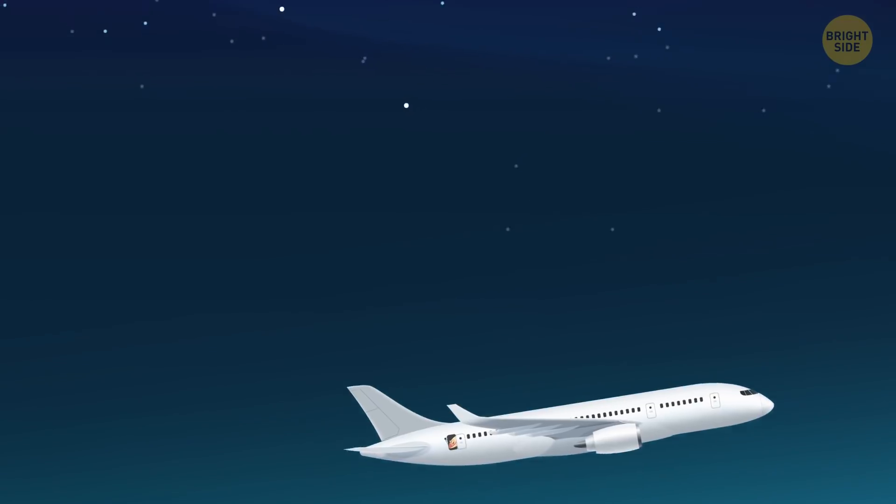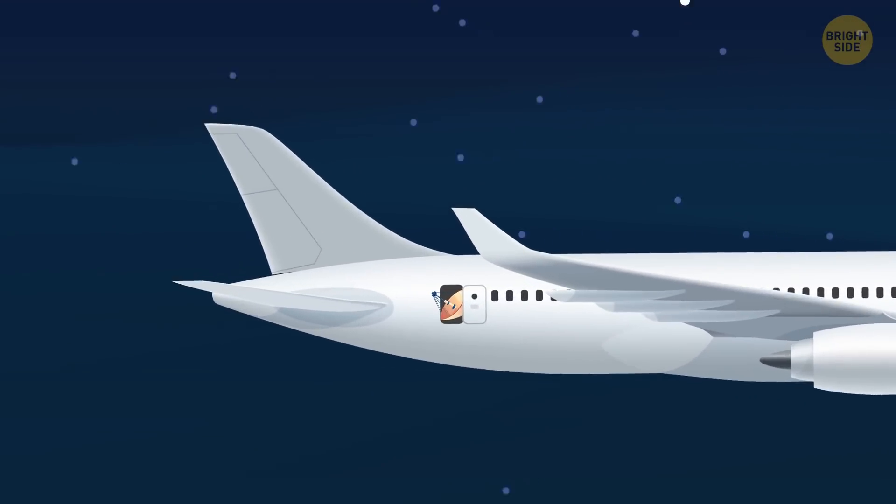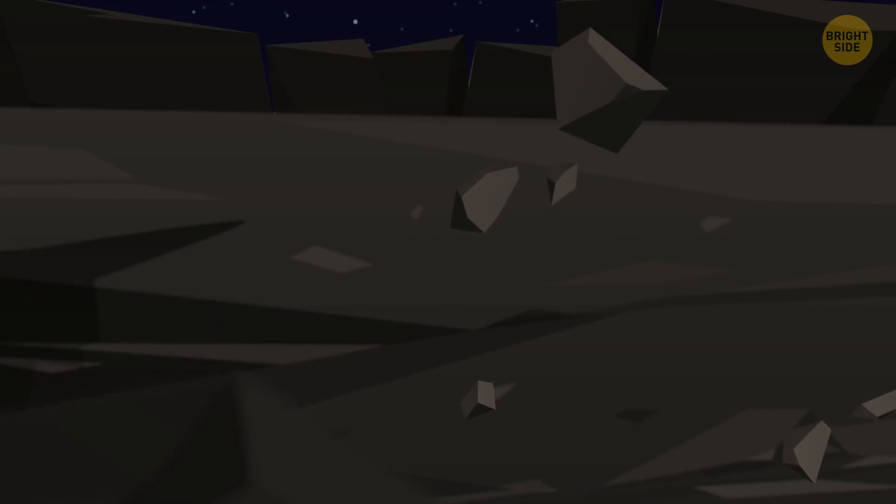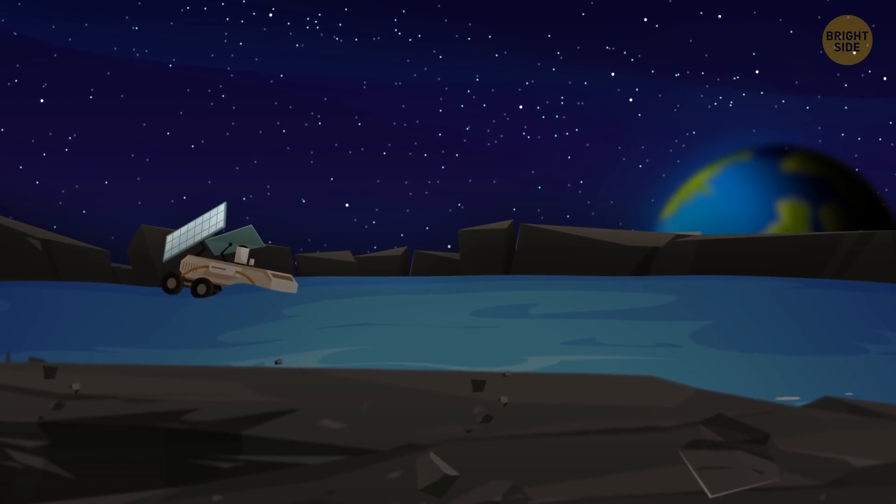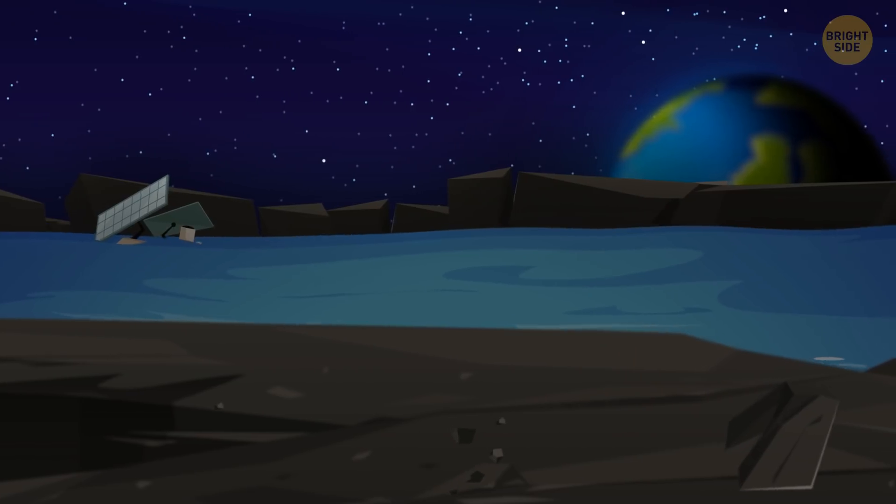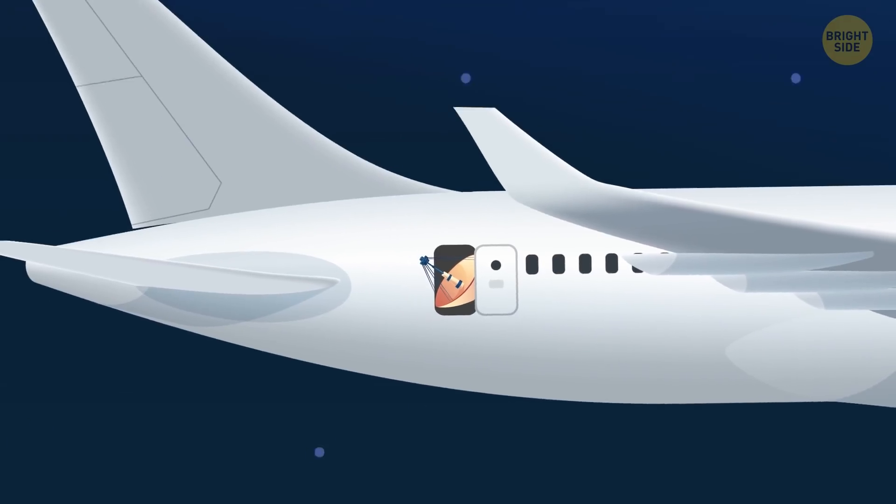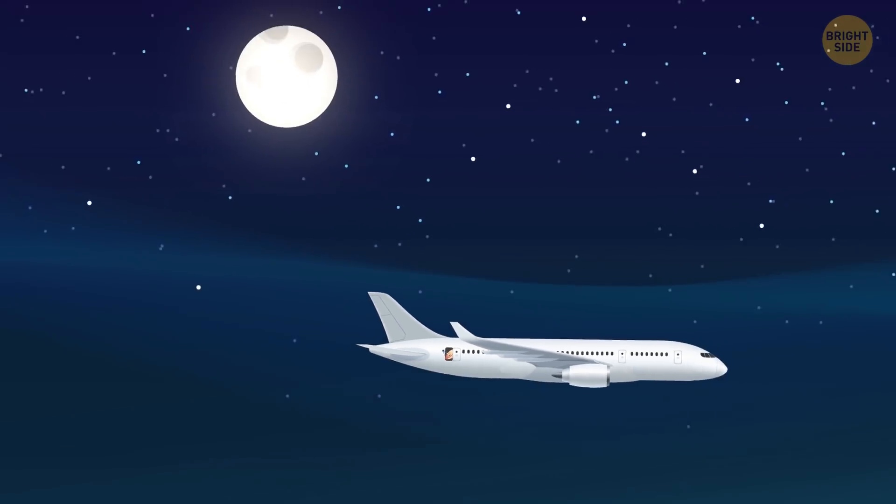The observations were made from the upper atmosphere of the Earth. At such an altitude, the dry air allowed the telescope to see even the smallest details. Water might have been in the craters at the poles of the Moon. These places have never seen light. And the water there might be encased in ice. But SOFIA found water on the sunlit surface of the Moon.